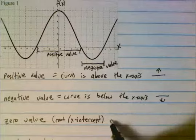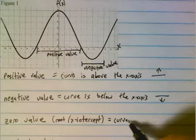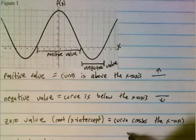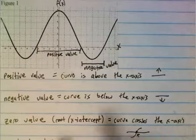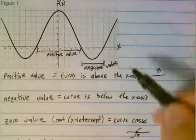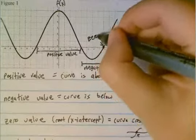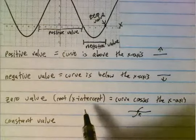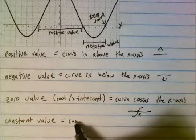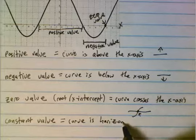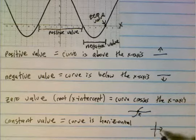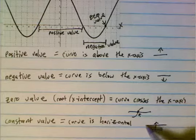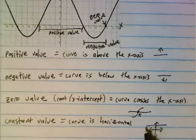A zero value is where the curve crosses the x-axis, and there are several points where that happens. A constant value isn't shown on this graph — a constant value just means that the curve is horizontal. So if we had our little x and y axes here, we'd be looking at something like a flat horizontal line — that would be f of x having a constant value.